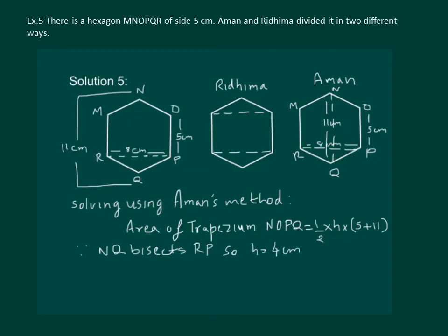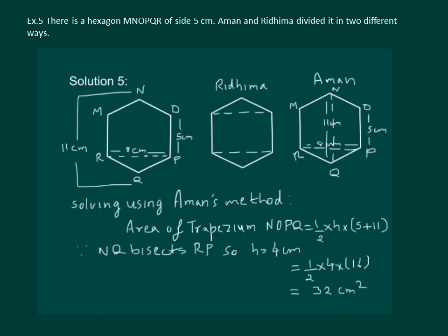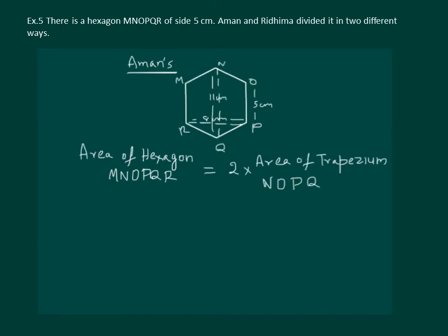Since NQ bisects RP, h = 4 cm. The area of trapezium NOPQ = ½ × 4 × 16 = 32 cm². Amman's hexagon consists of two such congruent trapeziums, so we multiply by 2. Hence the area of hexagon MNOPQR = 2 × 32 = 64 cm².